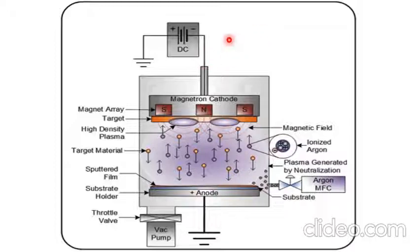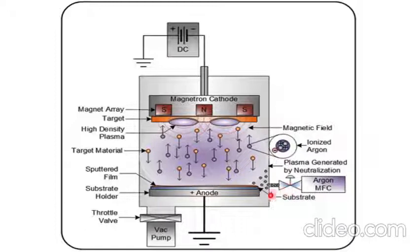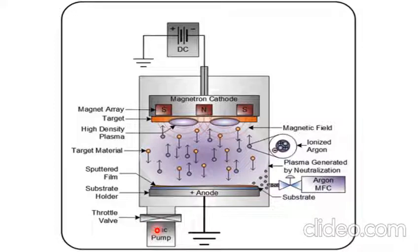In different magnetron sputtering instruments, both the anode and cathode may be connected with a high potential source. The reaction chamber is connected with a vacuum pumping system. This vacuum pumping system is usually a rotary vacuum setup or turbomolecular setup. Diffusion pumping systems can cause impurities due to the oil used in those systems, so pumping systems that create oil vapors inside the reaction chamber are mostly avoided.